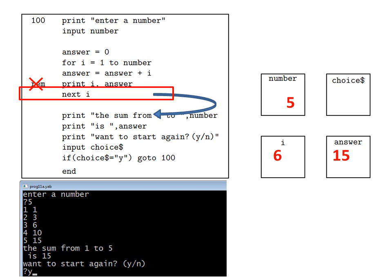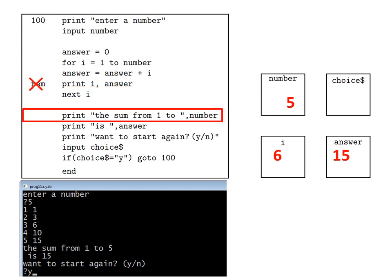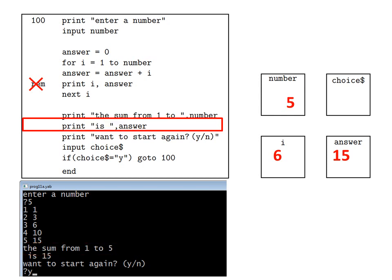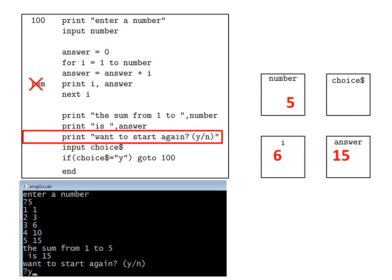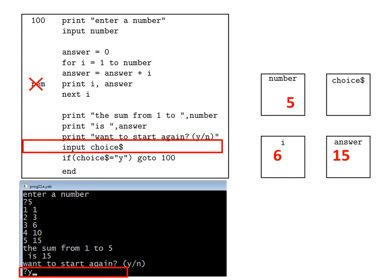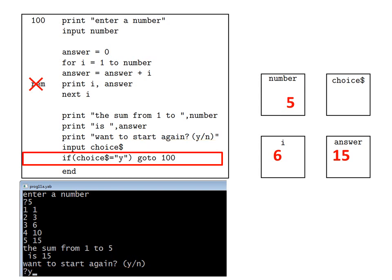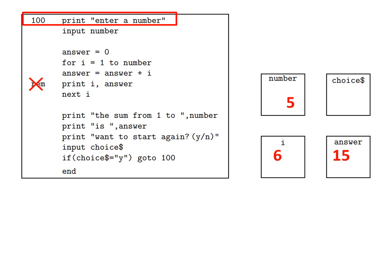Instead, the program flow continues as normal to the next line in order, which is 'print the sum from one to number', which on the black screen appears as 'the sum from one to five'. Then 'print is answer' on the black screen becomes 'is fifteen'. Then 'print want to start again yn' places that message on the black screen. Then 'input choice$' results in a question mark prompting us to enter something through the keyboard. So let's suppose we enter y for yes. Choice$ equals y is true, so the computer jumps back to line 100 at the start of the program.